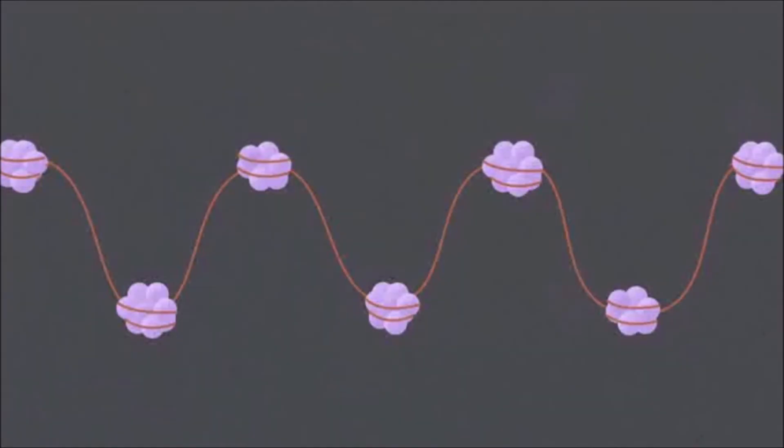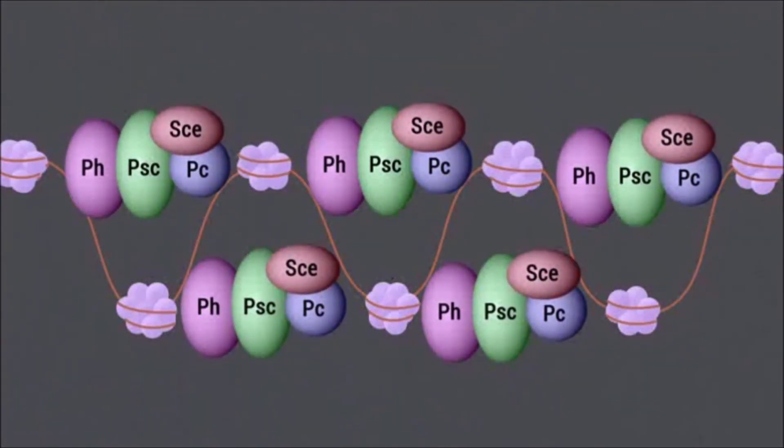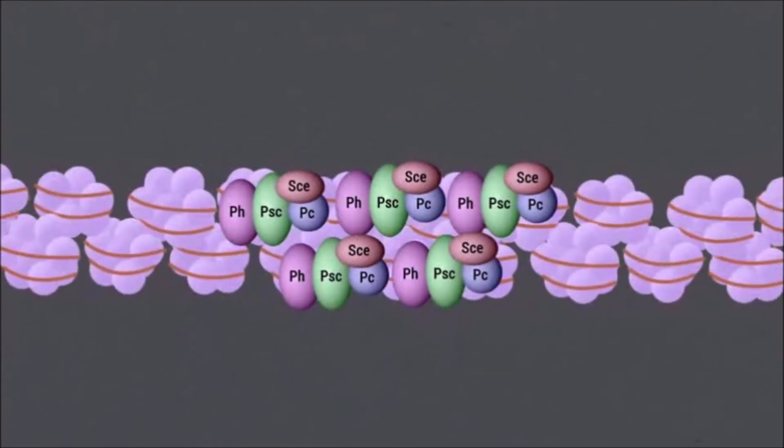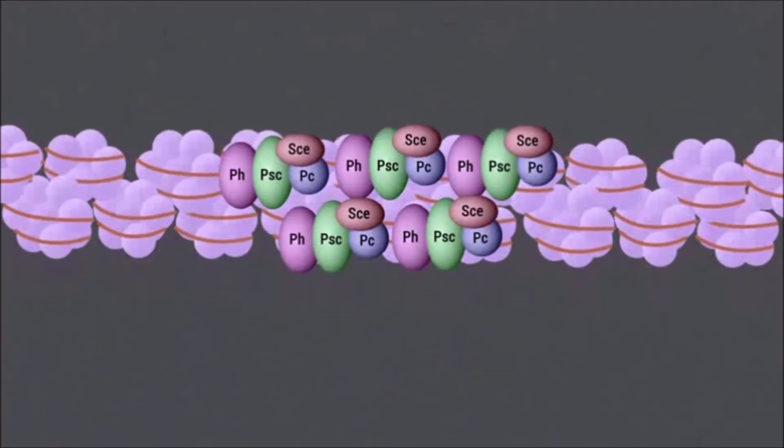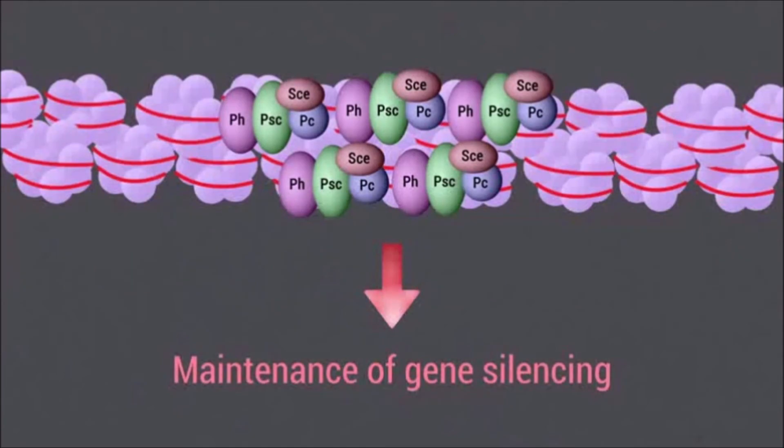Taken together, our data suggest that PRC1 maintains gene silencing by folding chromatin domains and imposes an architectural layer to gene regulation.